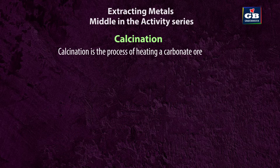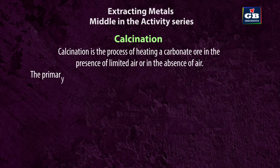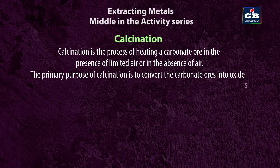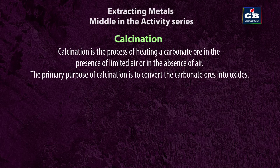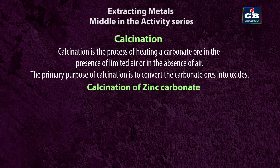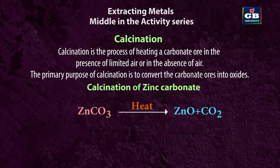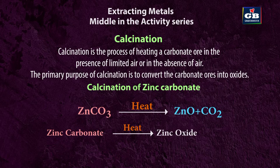Calcination is the process of heating a carbonate ore in the presence of limited air or in the absence of air. The primary purpose of calcination is to convert carbonate ores into oxides. For example, calcination of zinc carbonate: ZnCO₃ → ZnO + CO₂ (on heating). Zinc carbonate is heated and it decomposes into zinc oxide, releasing carbon dioxide gas.